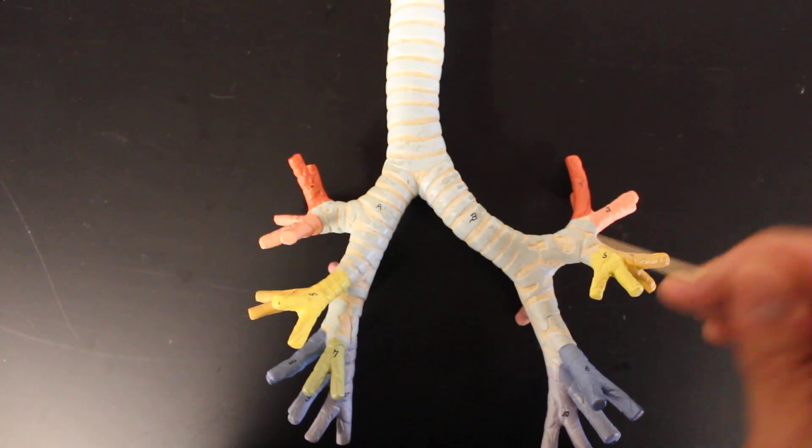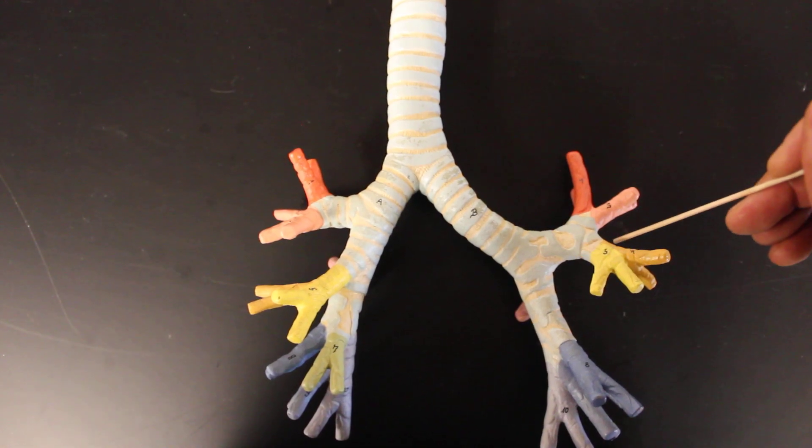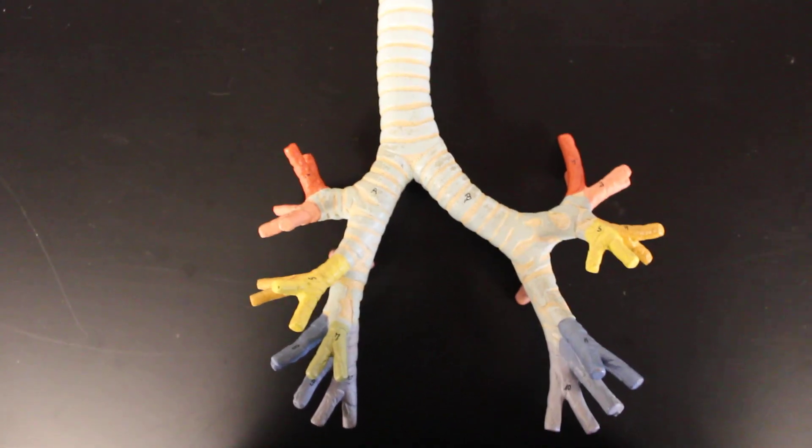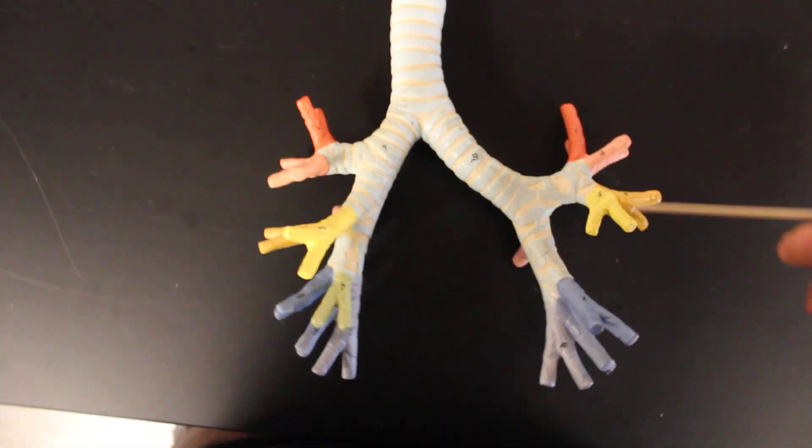And then of course continue on as it branches again to tertiary bronchi, tertiary and then these become bronchioles. And then as you continue to split we'll split more and more times into more bronchioles.